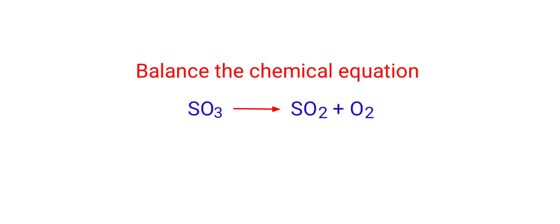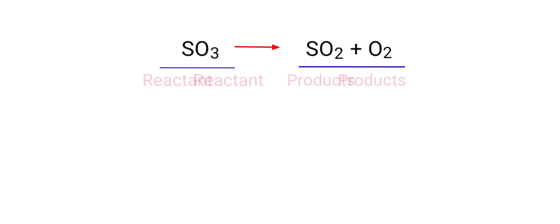Balance the chemical equation: Sulphur trioxide gives us Sulphur dioxide plus Oxygen. In this equation, the reactant is Sulphur trioxide and the products are Sulphur dioxide and Oxygen.